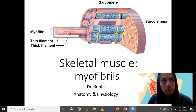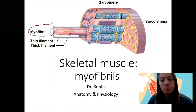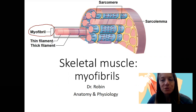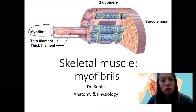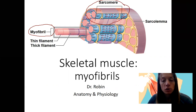We've talked about the muscle cell and the structures that make it up. Now we're going to zoom in inside the cell and look at the myofibrils that take up the bulk of the muscle cell itself — that sarcoplasm. The myofibrils are made up of myofilaments: thick and thin filaments. Those come together to form a sarcomere, which is the contractile unit of the muscle.